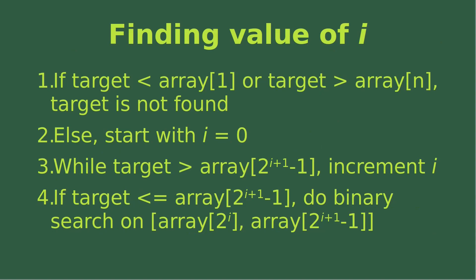Now let us see how we find out the value of i. Number one, if the target is smaller than the first element, or the target is larger than the last element indicated by index n, then we say that the target cannot be found.